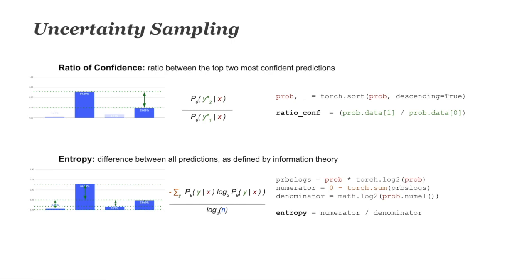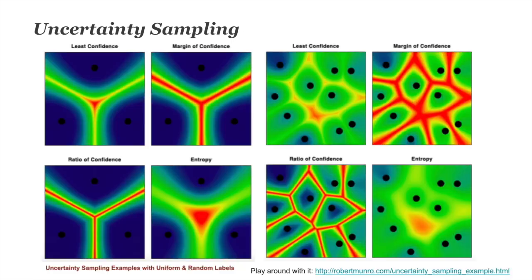Ratio confidence should give a more accurate indication of the difference between the top two most confident items. Finally, entropy uses information theory to look at all predictions — the difference between all these predictions and predictions with no information, which would be the case if all were 25% confident. Entropy takes into account all predictions, not just the top one or two like least confidence. Any of these four methods might be most appropriate for your data, and you won't know without testing — try them and see what's right.